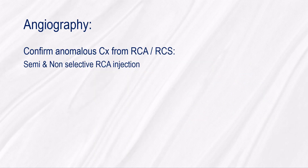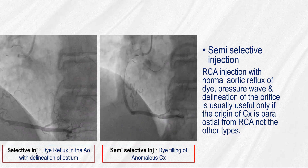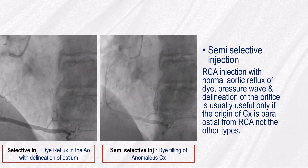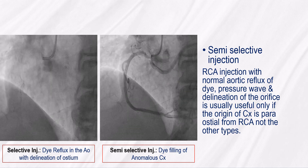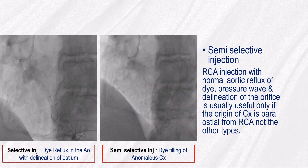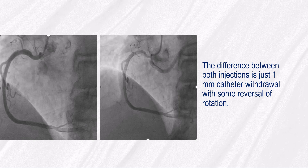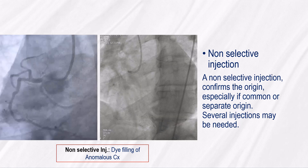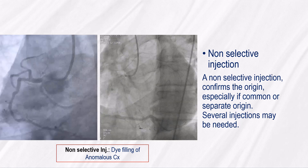To confirm a normal CX origin from the RCA or right coronary sinus, we need semi and non-selective RCA injections. An RCA injection with normal aortic reflux of dye and normal pressure waves with delineation of the orifice is usually useful only if the origin of the CX is para-ostial from the RCA, not other types. A semi-selective injection is needed. The difference between both injections is just one millimeter catheter withdrawal with some reversal of rotation. A non-selective injection is useful if the origin is a common or separate origin; several injections may be needed.